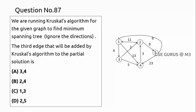Coming to question number 87, we are running Kruskal's algorithm for the given graph. Again, ignore the directions. The question asks what is the third edge selected. In Kruskal's algorithm, we can select any edge with the minimum cost first — it's not based on adjacency like Prim's. So we maintain edges sorted by cost: 1, 2, 3, 5, 6, 8, 9, 11...